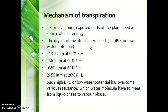The movement of the transpiration process mainly depends on the Diffusion Pressure Deficit, or DPD. This Diffusion Pressure Deficit determines the moisture level in the atmosphere.